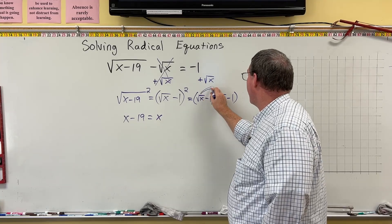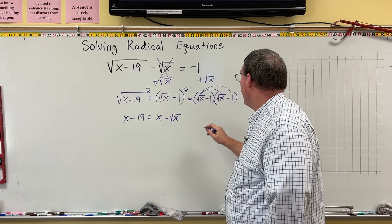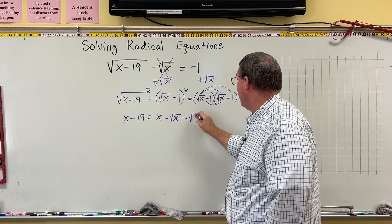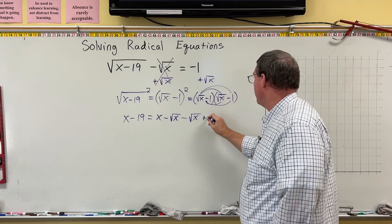Then we have the square root of x times negative 1. That's negative square root of x. And then we have negative 1 times square root of x, which is minus another square root of x. And then negative 1 times negative 1 is plus 1.